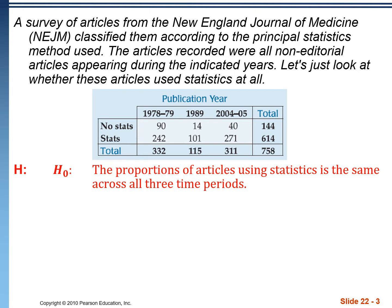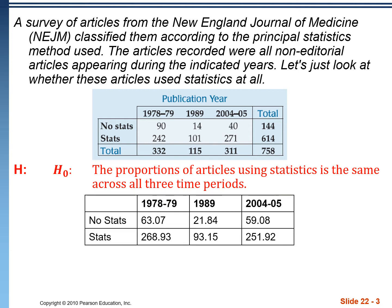Now we're going to use that null hypothesis to find out what our expected values are. In our null hypothesis, we're saying the proportions are actually staying the same — any difference that we're seeing is just the result of natural sampling variation. So if they are the same, we would get these expected amounts in each cell.